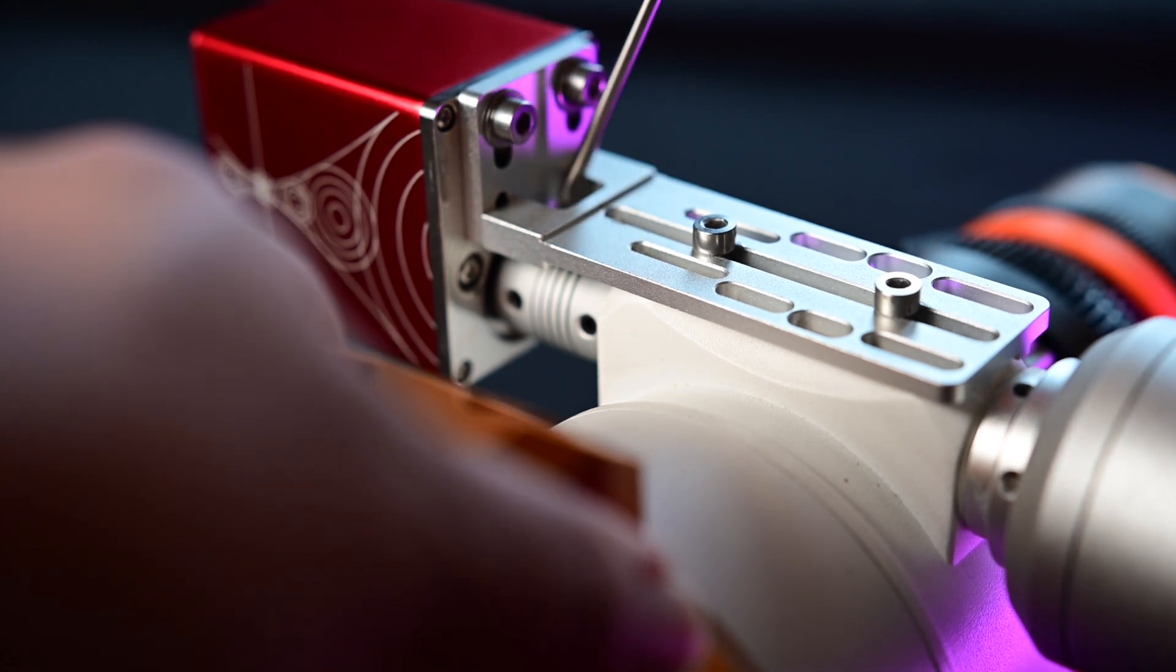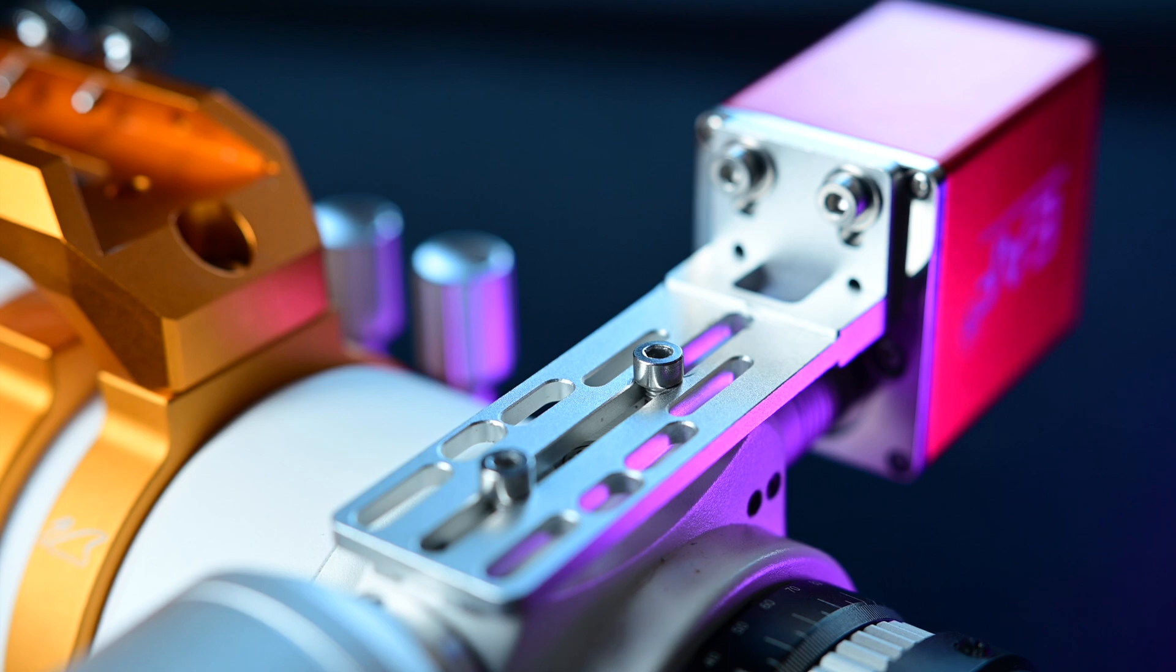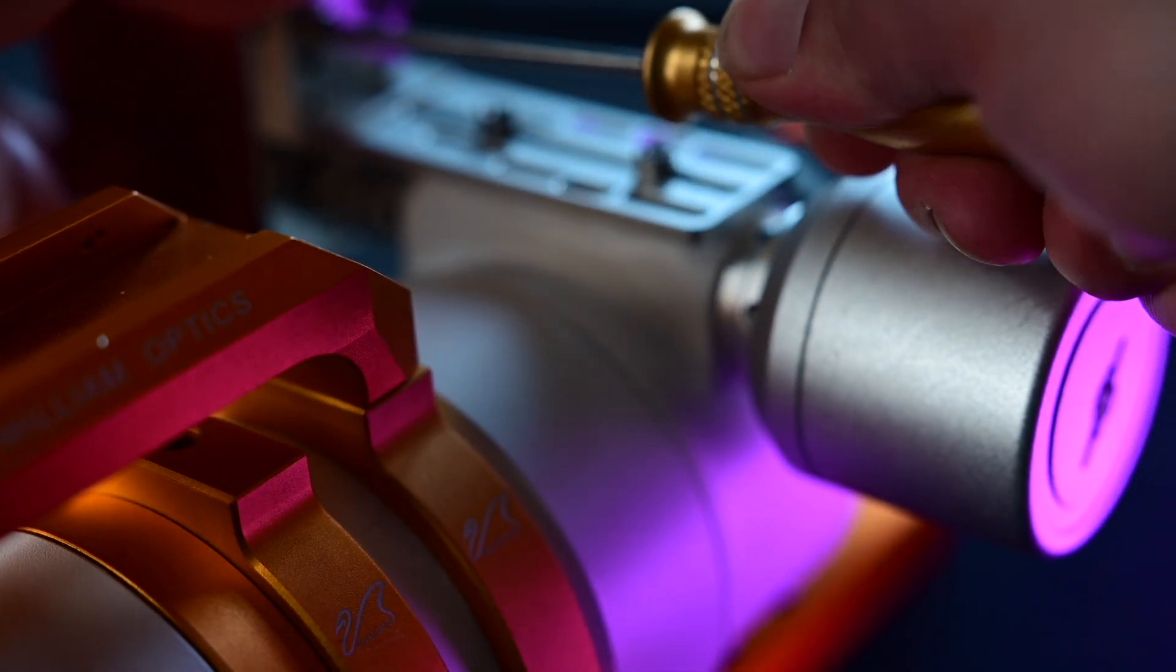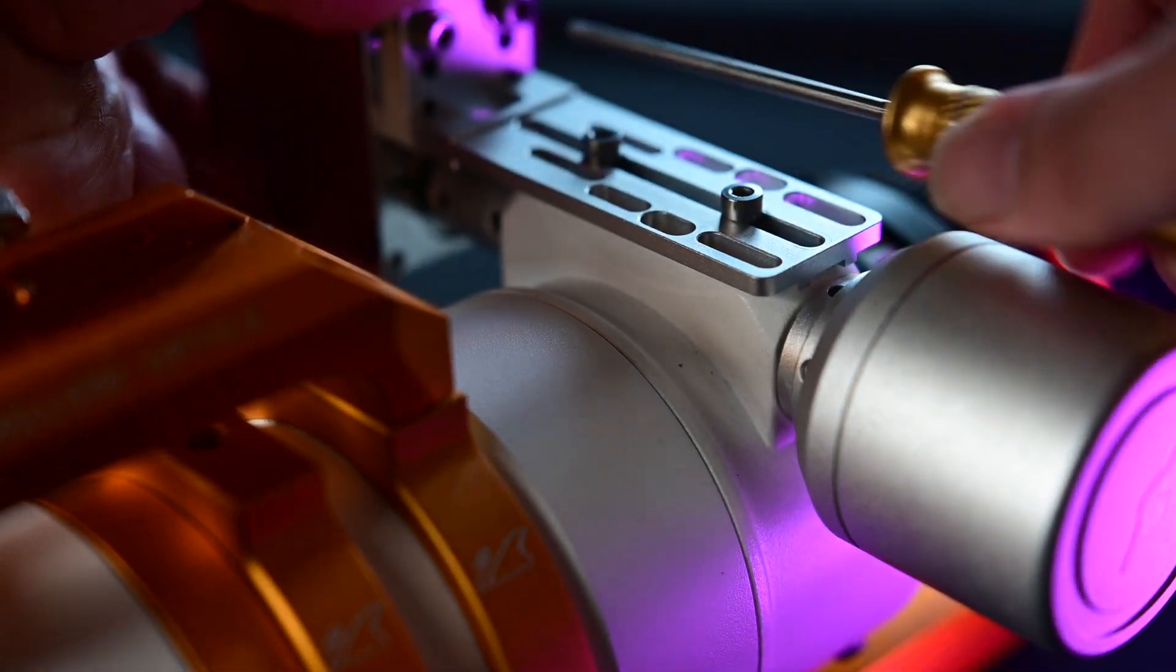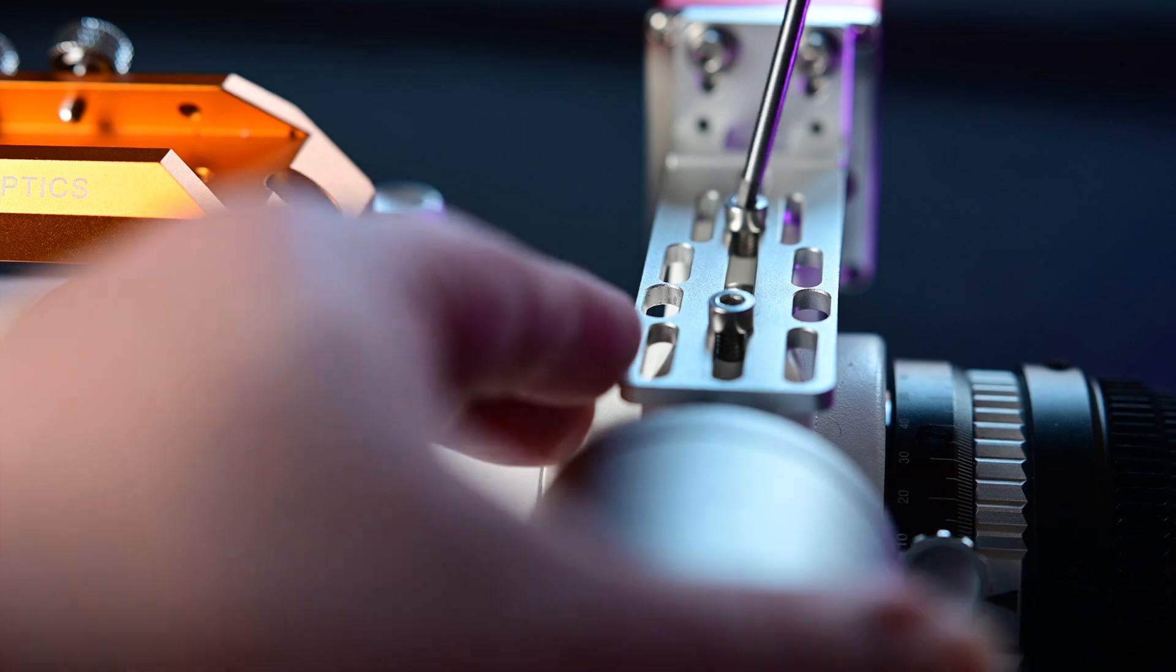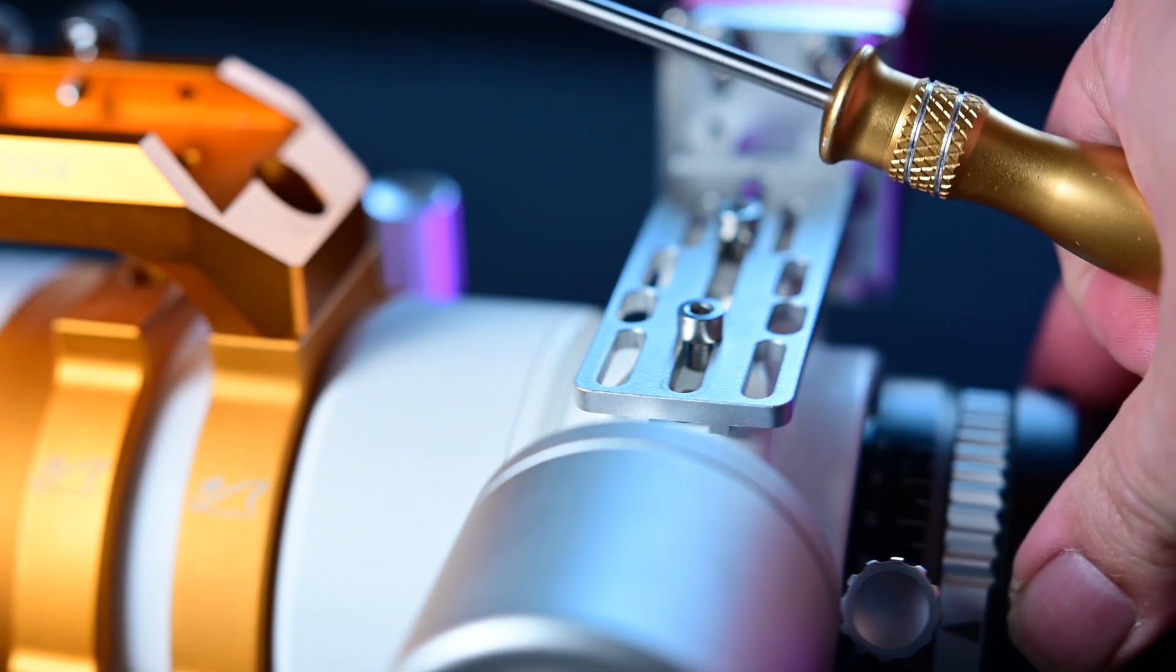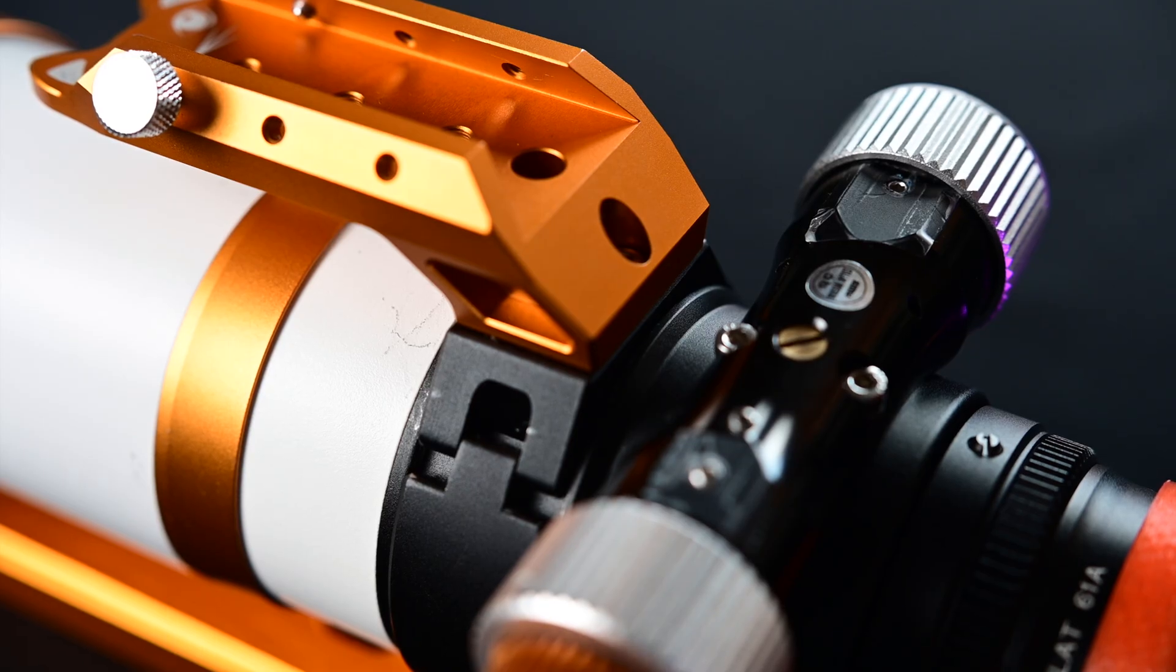Now do your final tightening on the rest of the screws. And there you have it, you've just installed your electronic focuser from ZWO onto the Zenistar Z73 APO refractor. But hey, what about the Z61? Well it is a little bit different and I'll show you in which ways.